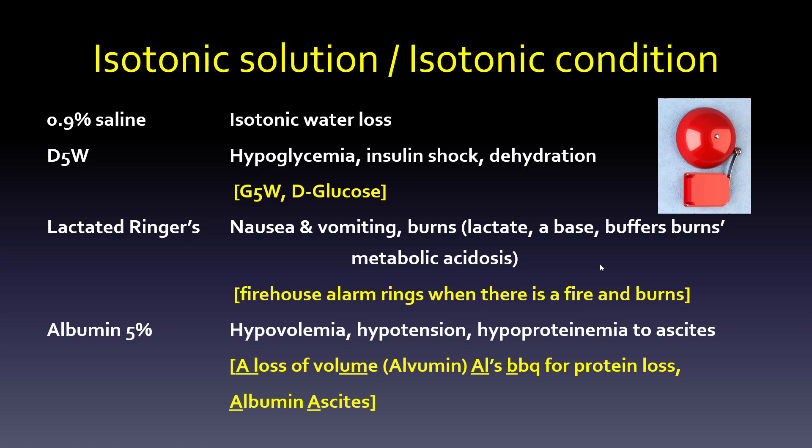Albumin 5% is used for hypovolemia, hypotension, hypoproteinemia, and ascites. We expect a loss of volume. The mnemonic: 'AL' from albumin for 'a loss,' and 'UM' from volume. Also, 'Al's barbecue' — barbecue has protein in it, and ALB are the first three letters of 'Al's barbecue.' Finally, albumin and ascites both start with an A.